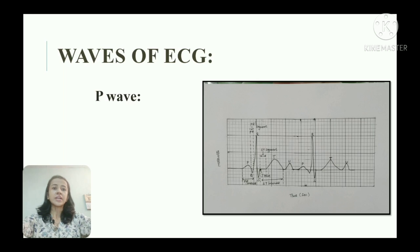You can see here in the diagram it is a positive wave which is directed upward and it is rounded. It is because of atrial depolarization and spread of the impulse from SA node to atrial muscle. Duration of P wave is about 0.1 second and amplitude is 0.1 to 0.12 mV.